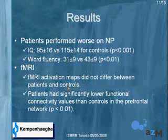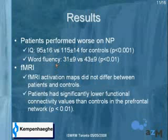First, the results from the neuropsychological data: the patients performed worse than the controls, so the IQ is lower, and this is significant. Also on the specific test that probes aphasia, the patients also performed worse.